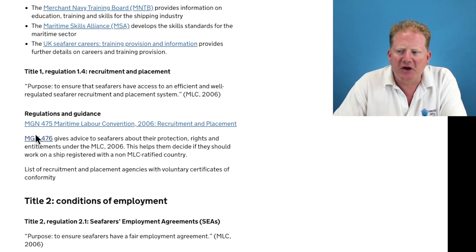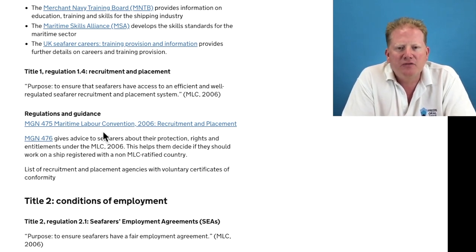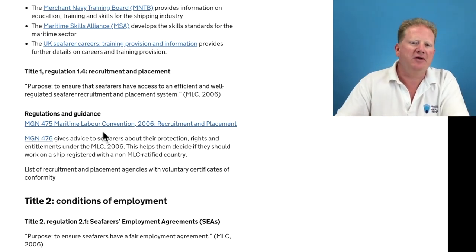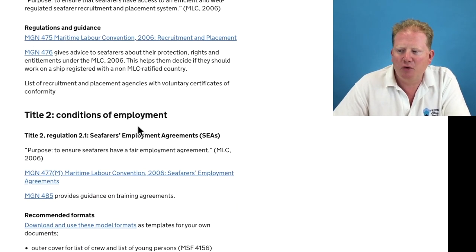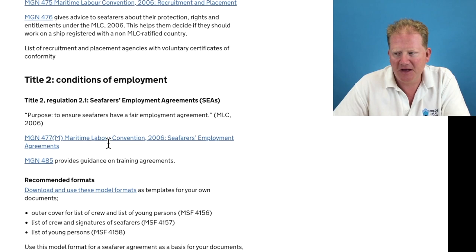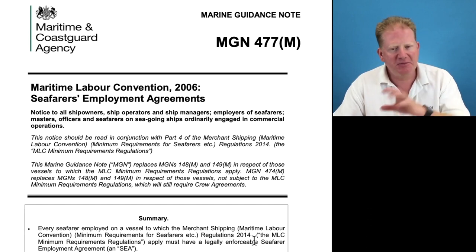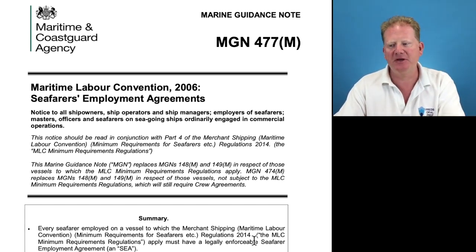Recruitment and placement: MGN 475 is MLC recruitment and placement. You must come from a verified recruitment agency, making sure they're doing their job correctly to supply the right people and that they are verified. Conditions of employment — SEAs. Everybody must have an SEA, a Seafarers Employment Agreement. This is MGN 477 and is all about Seafarer Employment Agreements. There have been quite a few questions on SEAs, so let's just make sure that you are 100% happy on this.